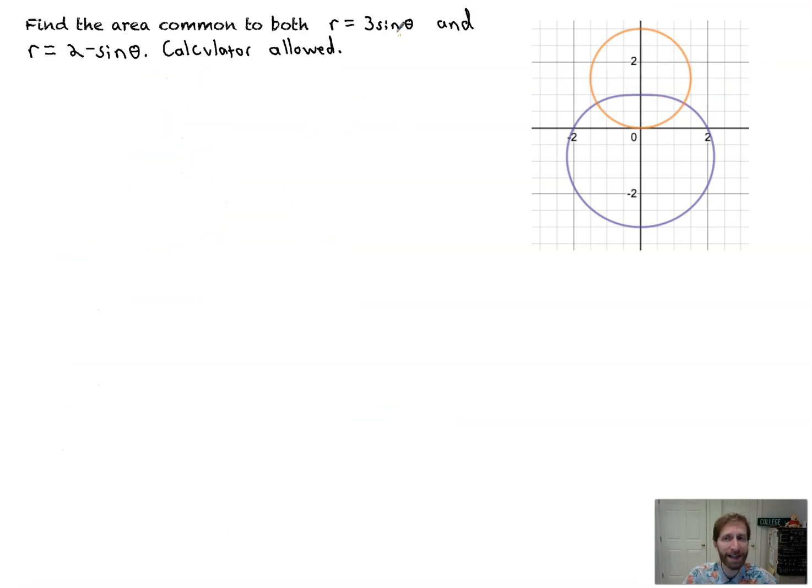We're going to do another one. Same exact graphs. But this time, we're going to find the area common to both. And this is where I like to say you add the, well, the tracks up. You notice where the tracks begin and end. Now, we've already set them equal to each other.